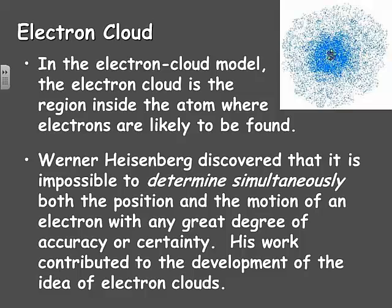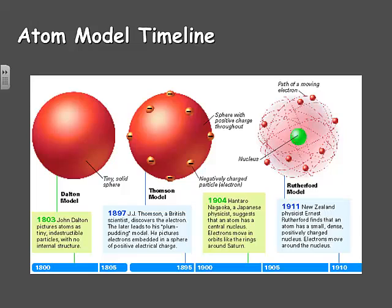Another scientist by the name of Werner Heisenberg discovered that it is impossible to determine simultaneously, meaning at the same time, both the position and the motion of an electron with any great degree of accuracy or certainty. And his work contributed to the development of this idea of electron clouds.